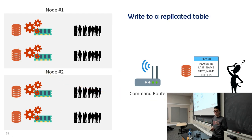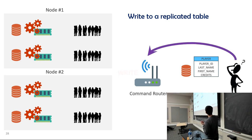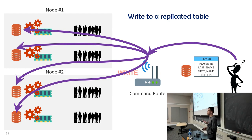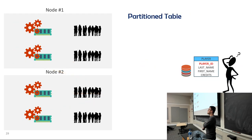Writing to a replicated table is more complicated. Because every partition has the same copy, if I write something, the changes need to go everywhere to keep the database in sync. All partitions receive that write request, and you get a confirmation that the write was complete and successful.